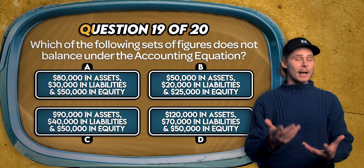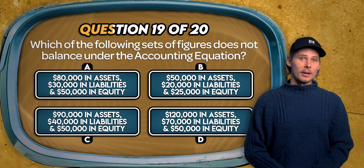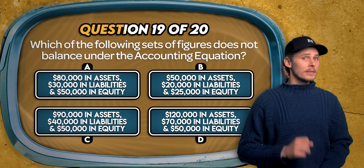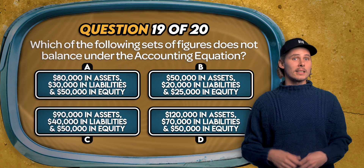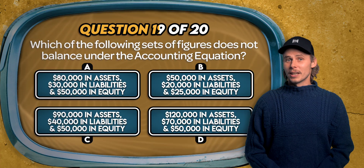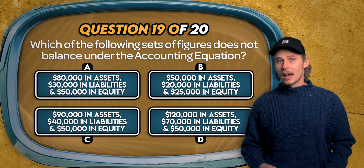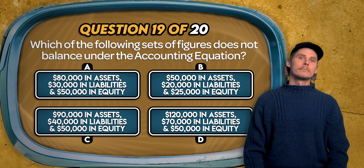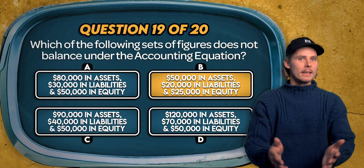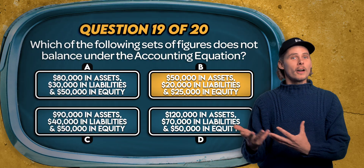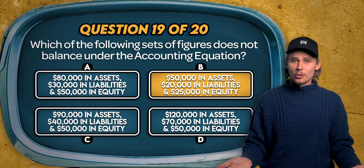Question 19. Which of the following sets of figures does not balance under the accounting equation? $80,000 in assets, $30,000 in liabilities, and $50,000 in equity. $50,000 in assets, $20,000 in liabilities, and $25,000 in equity. $90,000 in assets, $40,000 in liabilities, and $50,000 in equity. Or $120,000 in assets, $70,000 in liabilities, and $50,000 in equity? The answer is B. $20,000 in liabilities plus $25,000 in equity is $45,000, which doesn't match the $50,000 in assets.